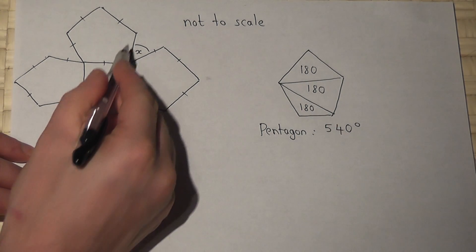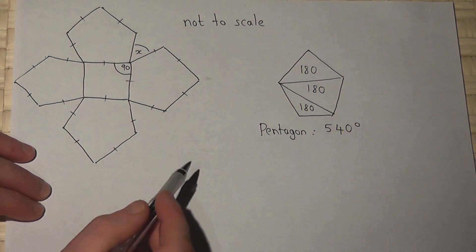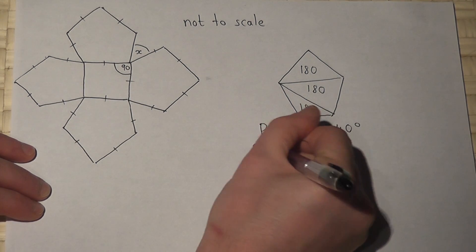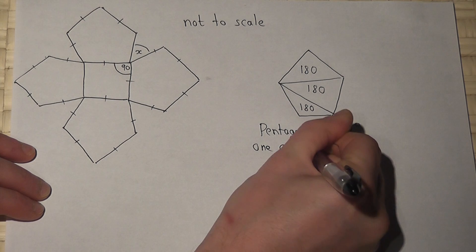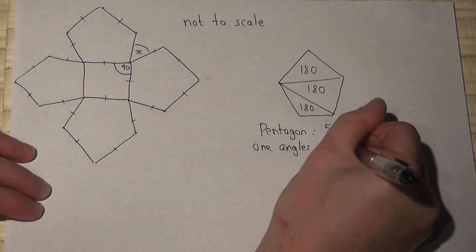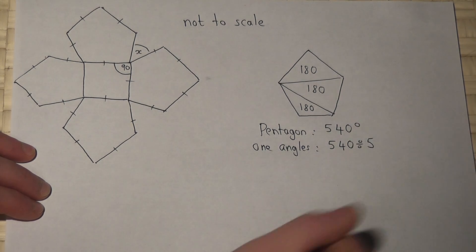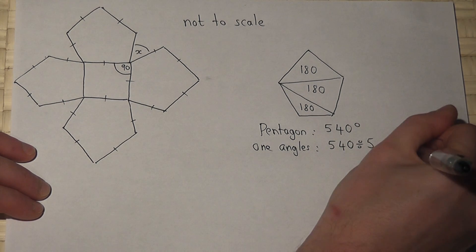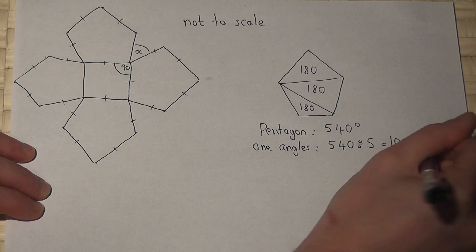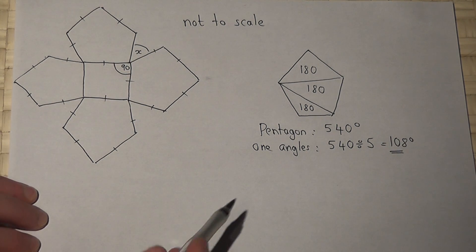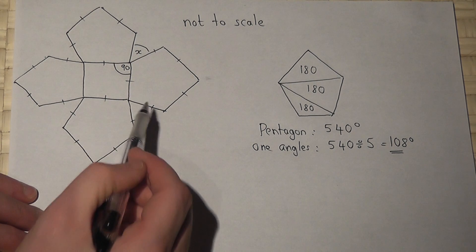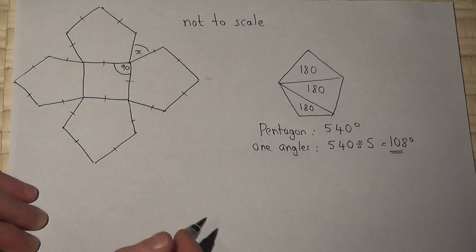So if the five angles in the shape add to 540, then one of the angles, if it's regular, must be 540 divided by 5, which is 108 degrees. So I've therefore found that each of the angles within the regular pentagon equals 108.